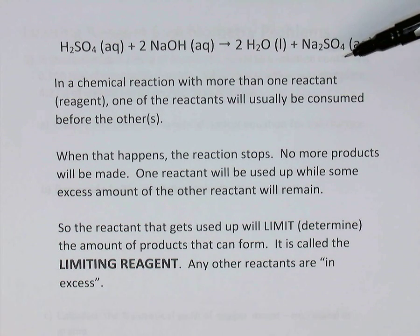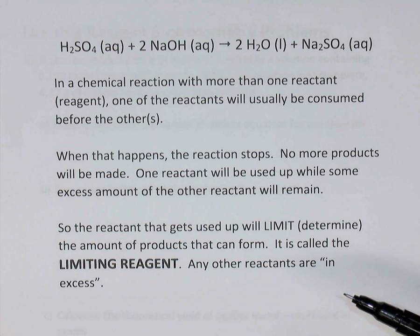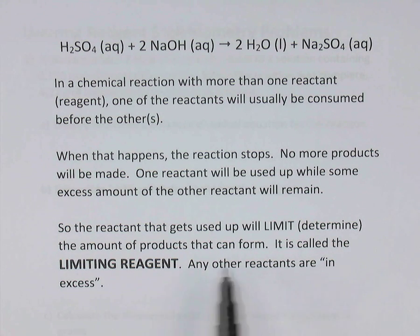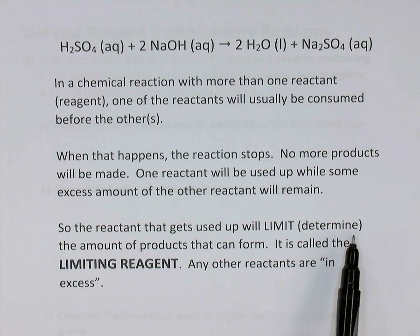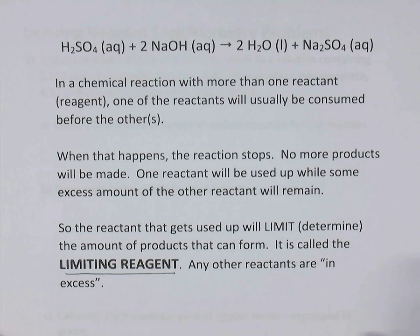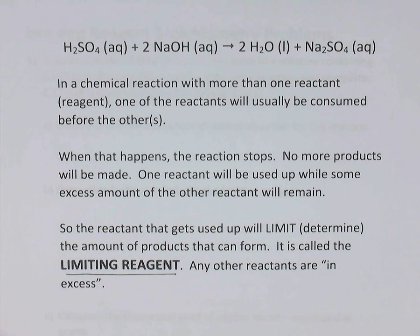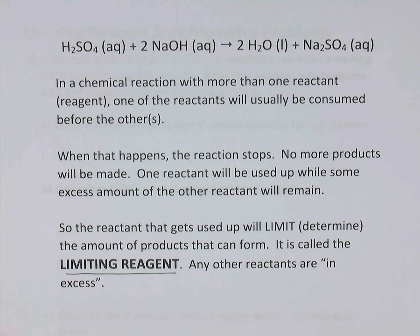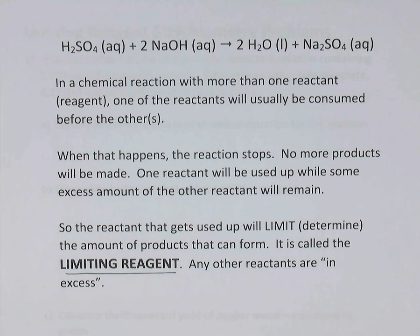Whichever reactant or reagent gets used up in the experiment will limit the amount of products that you can form — it determines the amount of product you can form. As a result, we call that reactant the limiting reagent. Any other reactants in the vessel are called excess reagents because they're going to be left over at the end. You'll have some excess amounts of all the other reactants.